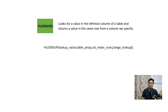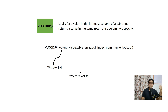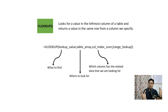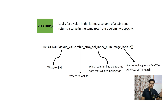Syntax-wise, VLOOKUP looks like this. The lookup value is what you are going to look up — what to find. The table array is where you are looking for it — the table or database from which you are searching. The column index number is which specific column has the related data that you are looking for.